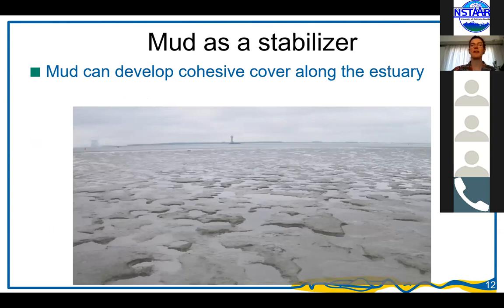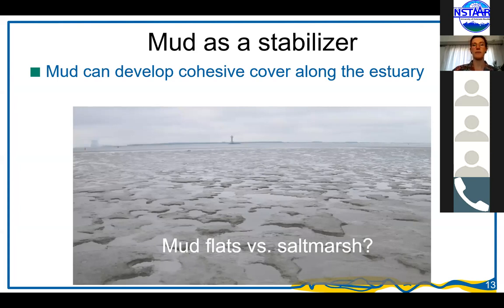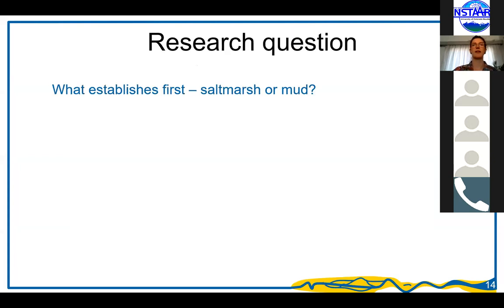Obviously, there are not only biostabilizers stabilizing sediment, but also mud. When mud settles in a system, it can create a cohesive cover that significantly reduces erodibility of the sediment — similar to how salt marsh vegetation holds sediment in place. Interestingly, combining mud and salt marsh creates interactions: mud settling is enhanced when salt marsh is present, and increasing mud can also enhance salt marsh establishment. So for a given site, we don't know whether we'll get a mudflat or a salt marsh. This leads to my research question: what establishes first — salt marsh, or does mud establish first and then the salt marsh?